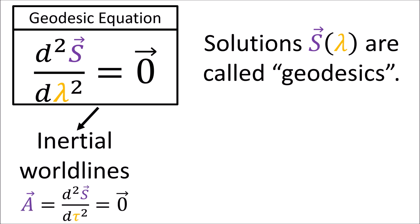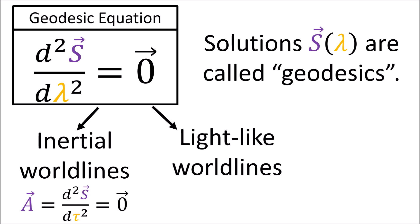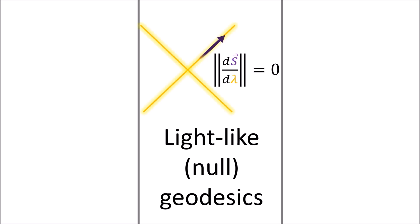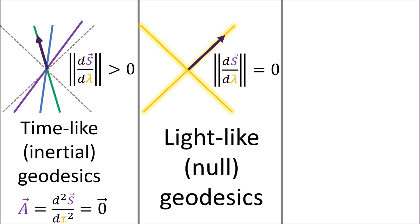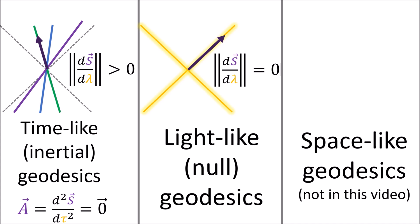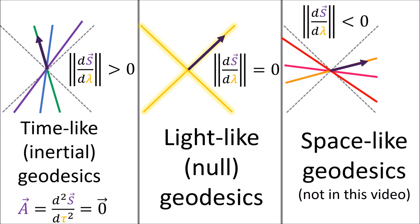Geodesics include inertial world lines that have zero proper acceleration and also the world lines of light. World lines of light are called light-like geodesics, or null geodesics, because their slope is given by a vector that has zero Minkowski length. Inertial world lines are sometimes called time-like geodesics, because their slope is given by a time-like vector that has a positive Minkowski length and is angled more vertically than a light-like vector. There are also space-like geodesics, defined with a space-like vector, but those won't be discussed in this video.